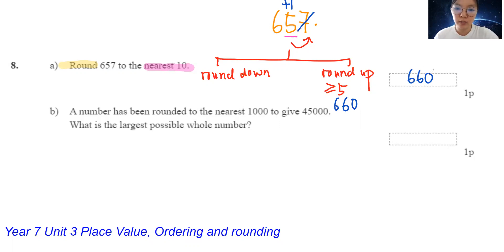Part B: A number has been rounded to the nearest thousand to give 45,000. What is the largest possible whole number? This is a reverse way where they tell you that the final number after rounding is 45,000. They want you to find the number before rounding. This is slightly challenging because you have to think creatively and look and guess. So again, I can also round up or round down.